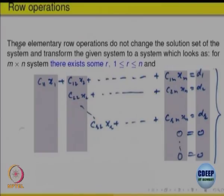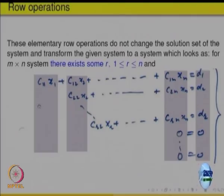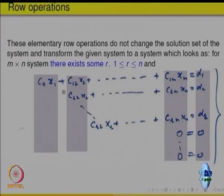Elementary row operations, when performed on a system of linear equations, do not change the solution set. The aim is that by applying these elementary row operations, an m×n system — that is, m linear equations in n variables — can be transformed to a system of a specific form. In the first equation the coefficients are c11, c12, and so on. In each subsequent equation, at least one more variable is eliminated.